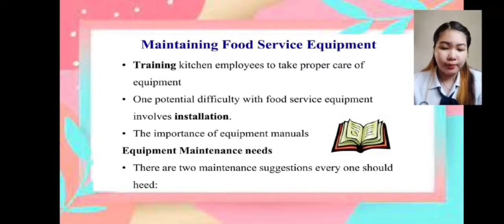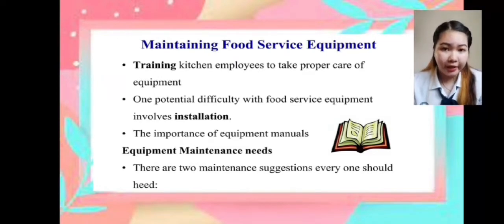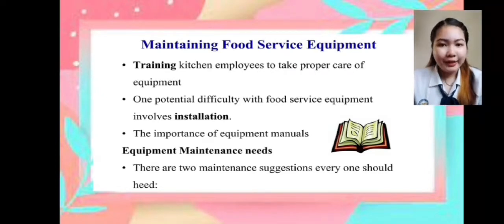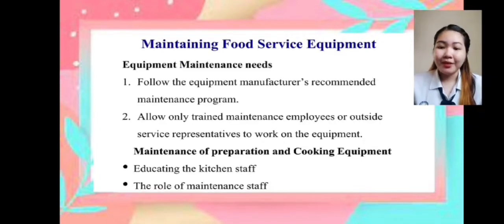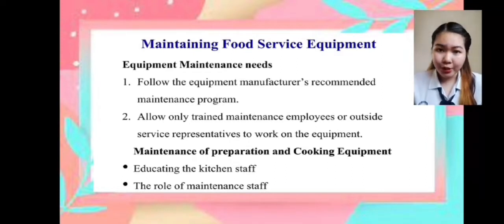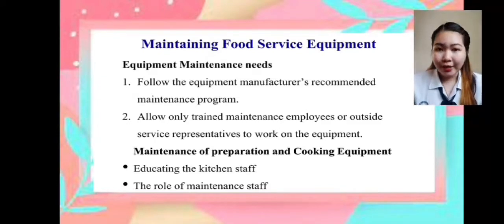One potential difficulty with food service equipment involves installation. It is important to have proper planning before we install or place equipment in the right location to avoid difficulties and ensure smooth operation in the kitchen. Each kitchen staff member must know and understand the equipment manuals before use, for their safety and to avoid potential danger or misuse. There are two maintenance suggestions everyone should follow: number one, follow the equipment manufacturer's recommended maintenance program; number two, allow only trained maintenance employees or outside service representatives to work on the equipment. Lastly, maintenance of preparation and cooking equipment involves educating the kitchen staff and the role of maintenance staff.